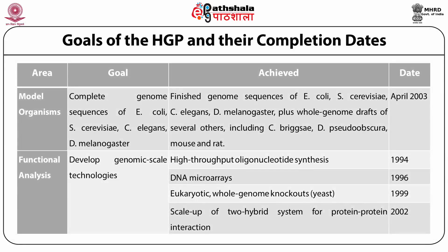An important goal was to sequence the genomes of model organisms such as E. coli, Saccharomyces cerevisiae, C. elegans and Drosophila melanogaster, plus whole genome drafts of several others including C. briggsae, Drosophila pseudoobscura, mouse and rat by April 2003. The last important goal was functional analysis, which involved development of genomic-scale technologies. By 1994 they generated high-throughput oligonucleotide synthesis; by 1996 they developed DNA microarrays; by 1999 they developed eukaryotic whole-genome knockouts in yeast; and by 2002 they were able to scale up the two-hybrid system for protein-protein interaction.